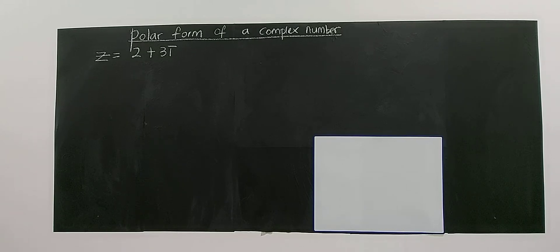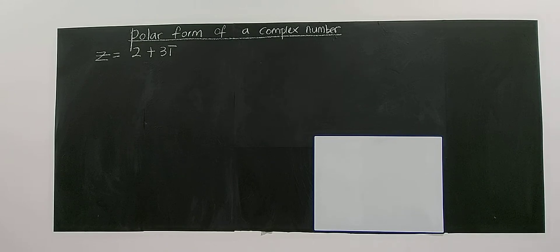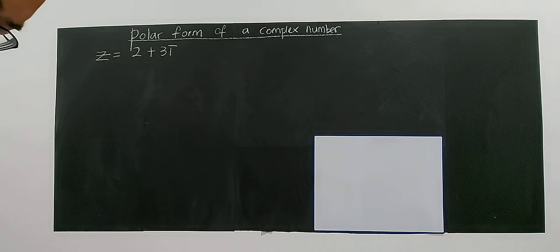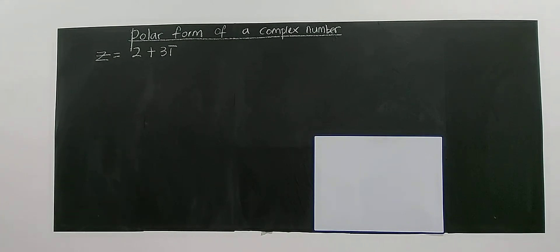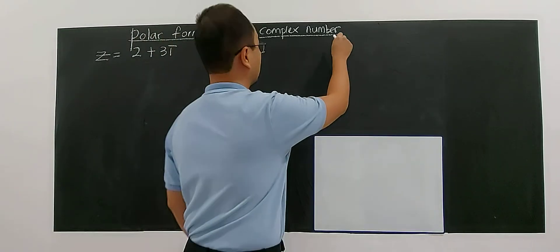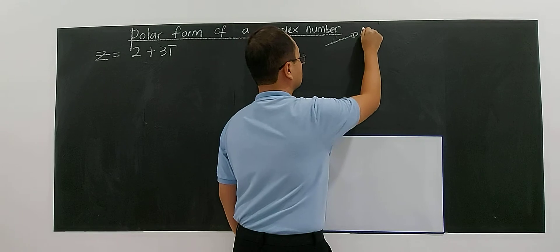Hello, let's continue with this example on the polar form of a complex number. As I previously explained, the concept of polar form involves the modulus and argument. To form a polar form, you need two pieces of information.